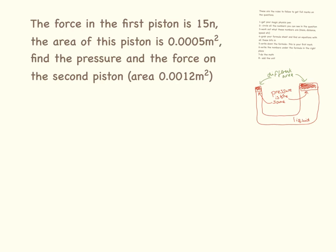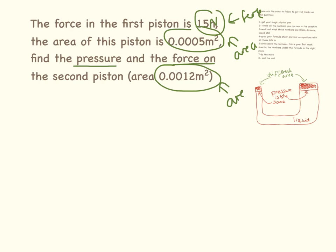Okay, the question is starting to get more complicated now. They want us to find two things. We need to find the pressure and the force on the second piston. So, let me circle all of my numbers. And that should be a capital N. So, I have force, area, and area. So, let's find the pressure on the first piston. Pressure equals force divided by area. So, we have 15 divided by 0.0005, which equals 30,000 pascals.